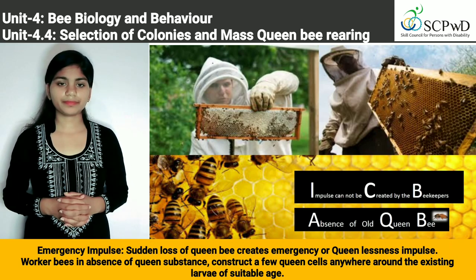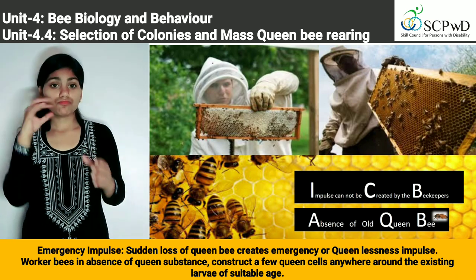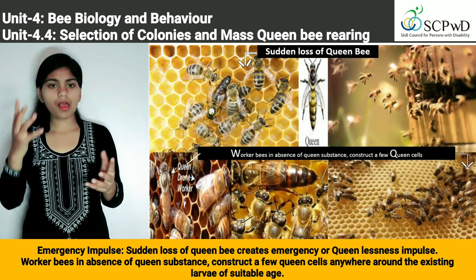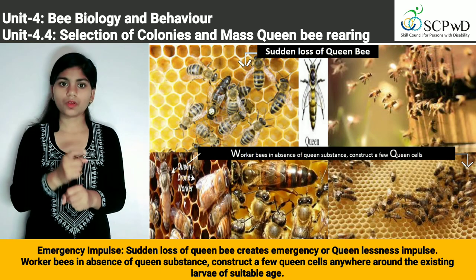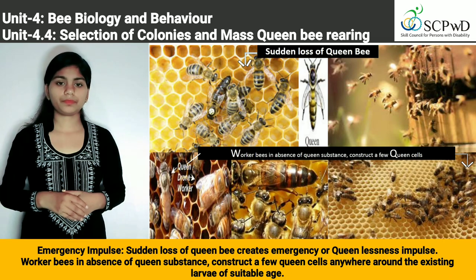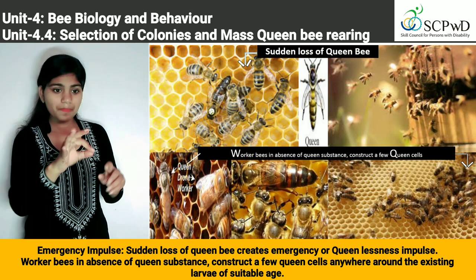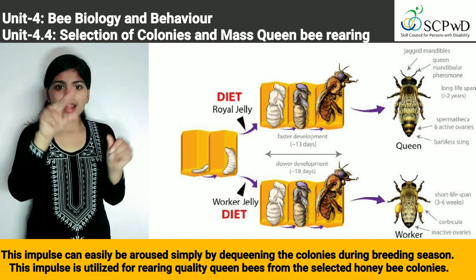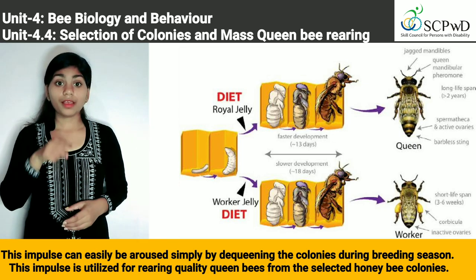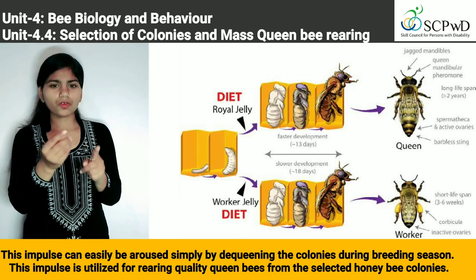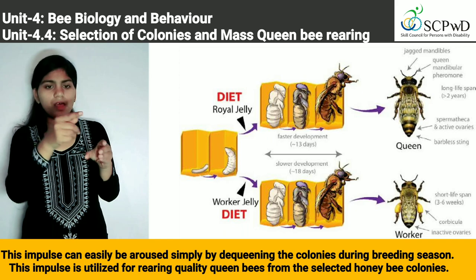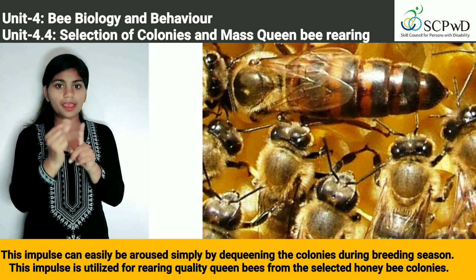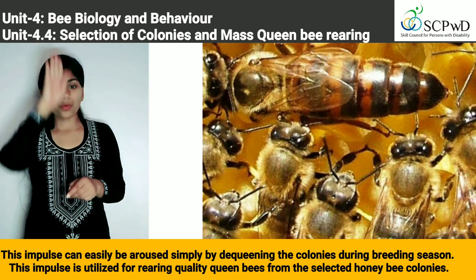The emergency impulse arises from the sudden loss of queen bee, creating a queenlessness condition. Worker bees, in the absence of queen substance, construct a few queen cells anywhere around existing larvae of suitable age. This impulse can easily be aroused by dequeening the colonies during breeding season, and is utilized for rearing quality queen bees from selected honey bee colonies.